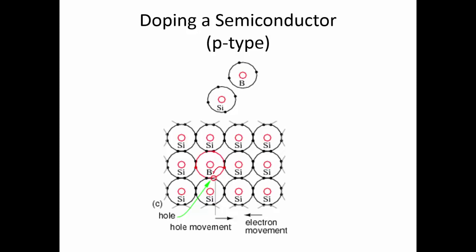This hole will be a positively charged charge carrier that's basically free to move around, and it's going to move in that same manner I showed with the intrinsic semiconductor. An electron will move into the hole here, which will make a hole there; an electron will move into the new hole, make a hole further along, and so on. If this side is negative and the other side is positive, this process would continue all down the semiconductor.